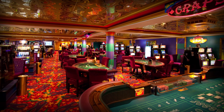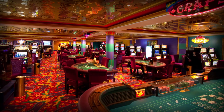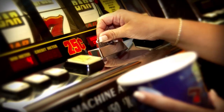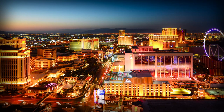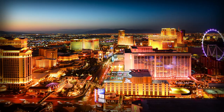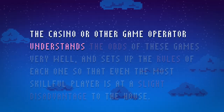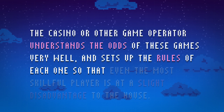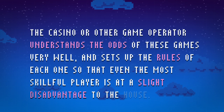Almost all of the games in a traditional casino — like blackjack, roulette, craps, baccarat, and slot machines — are all considered pure games of chance. These are games where the player's skill can improve their chances, but the house always has a statistical advantage. That's why these games are always backed by the casino, or whoever's running the game. The casino, or other game operator, understands the odds of these games very well, and sets up the rules of each one so that even the most skillful player is at a slight disadvantage to the house.